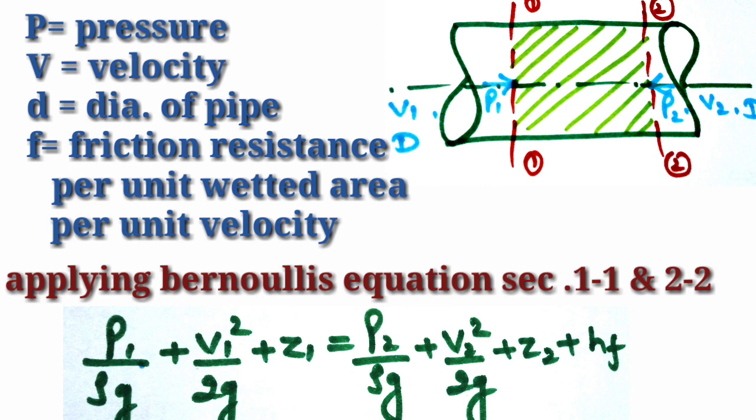The parameters we define are: P is pressure, V is velocity, D is diameter of pipe, 1-1 and 2-2 are cross sections, and F' is friction resistance per unit area per unit velocity squared. Now we apply Bernoulli's equation: P1/(ρg) + V1²/(2g) + Z1 = P2/(ρg) + V2²/(2g) + Z2 + hf, where hf is the head loss due to friction.